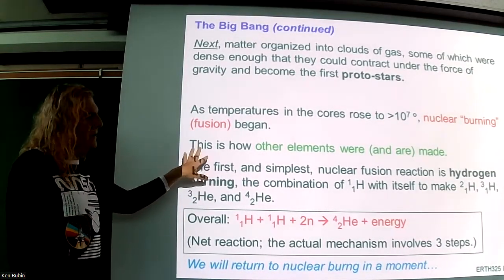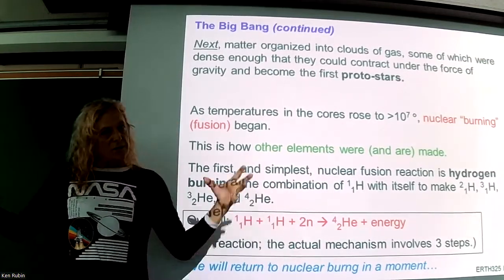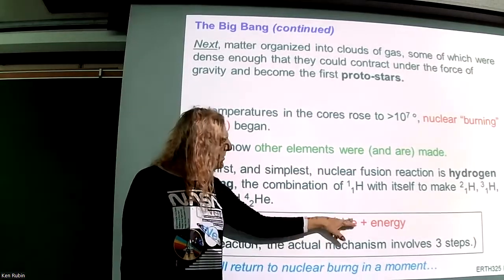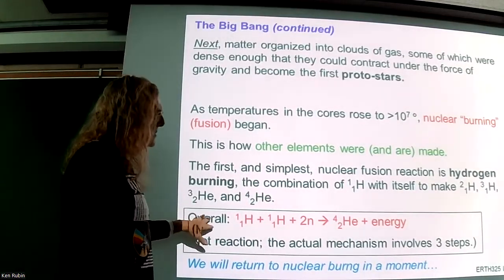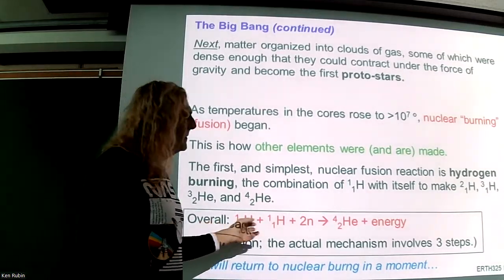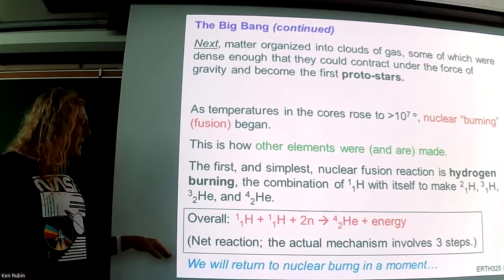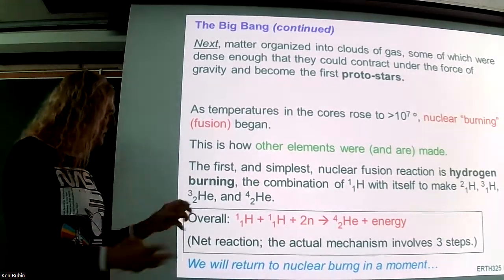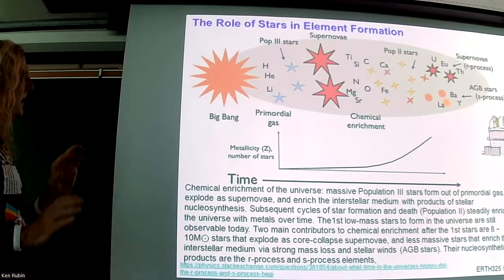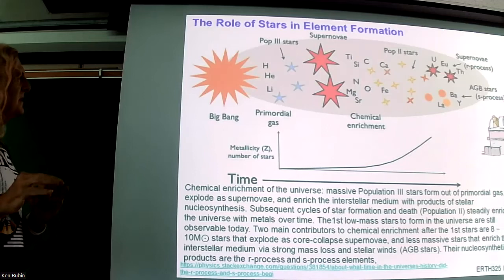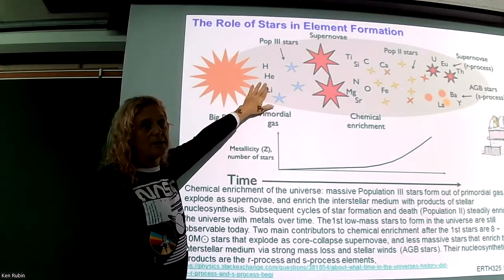When areas with enough nuclei collapsed gravitationally, temperatures and pressures increased enough to start what we call nuclear burning — a fusion process. This is how chemical elements are made. If you take two hydrogen atoms and two neutrons and cram them together under high temperature and pressure, you make a helium nucleus and liberate some energy. That's the energy we feel coming from our Sun as light. We also make some helium-3, but helium-4 is the main product. This reaction actually involves multiple steps.